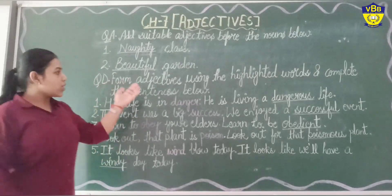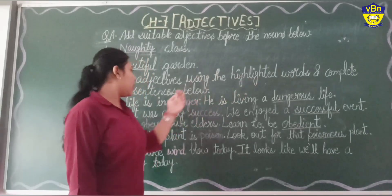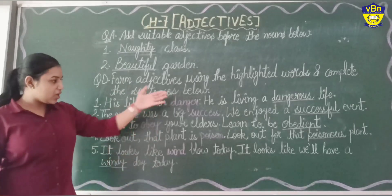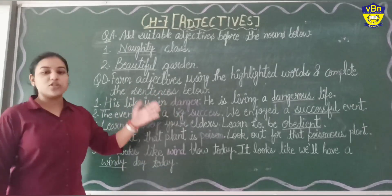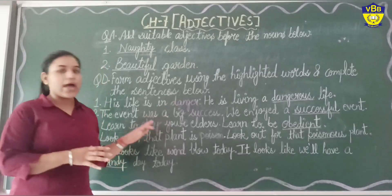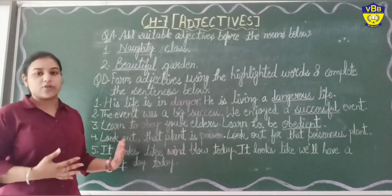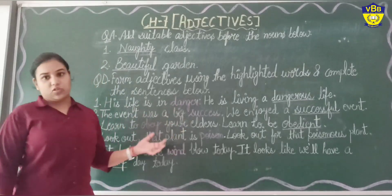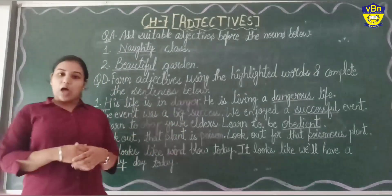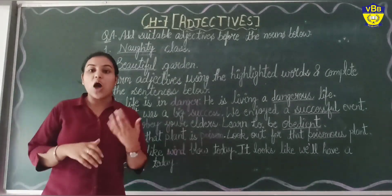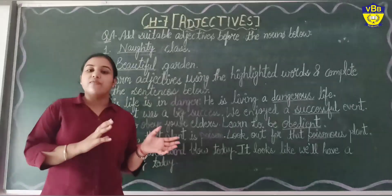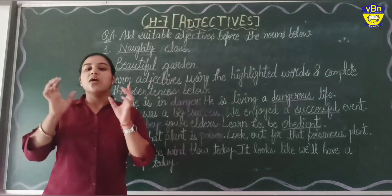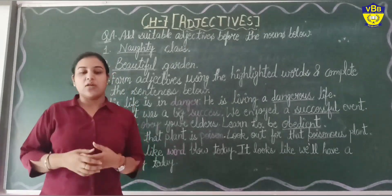Form adjectives using the highlighted words and complete the sentences below. You can see some words written with colorful chalk — these are all highlighted words. We have to form adjectives through these words only. Let's recall the process: we have to add a suffix to the given word, and in this way we will get our adjective.